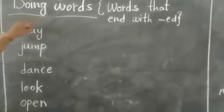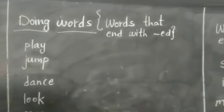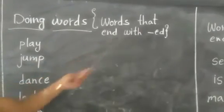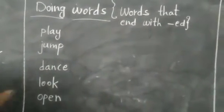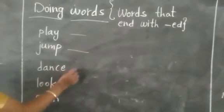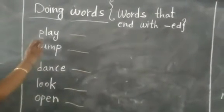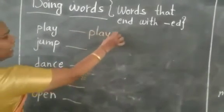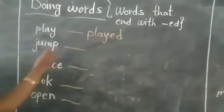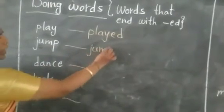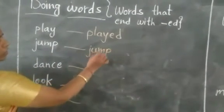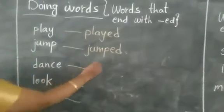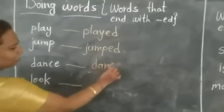Now let us take some doing words. Words that end with ED. So whenever the action is already done, these are the action words. Play — past tense: P-L-A-Y-E-D, played. ED we have to add. Jump — J-U-M-P-E-D. This action is done. Danced — D-A-N-C-E-D.